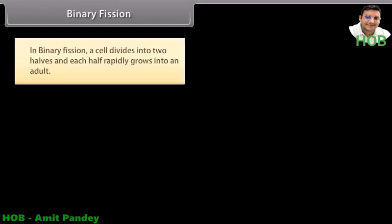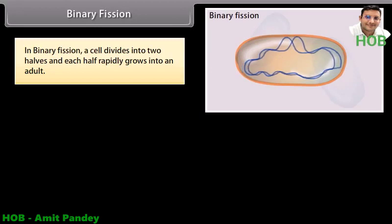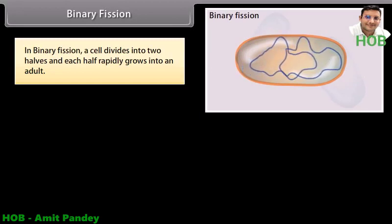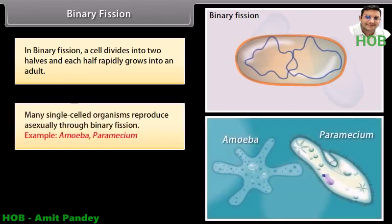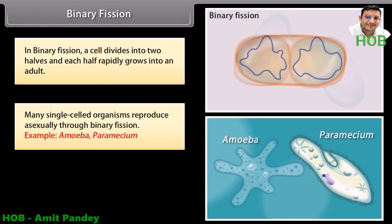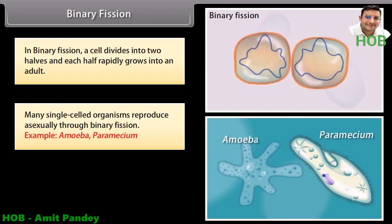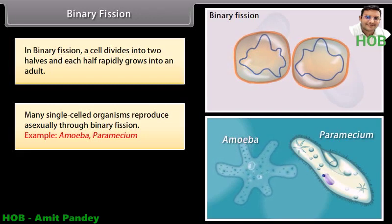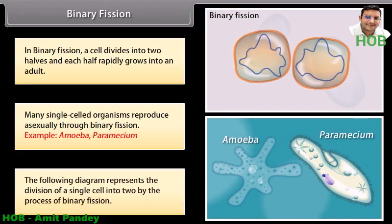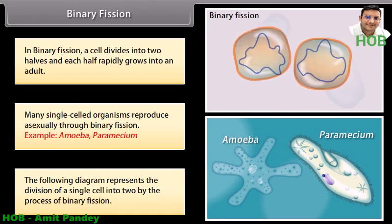Binary fission. In binary fission, a cell divides into two halves and each half rapidly grows into an adult. Many single-celled organisms reproduce asexually through binary fission. Examples include Amoeba and Paramecium. The following diagram represents the division of a single cell into two by the process of binary fission.